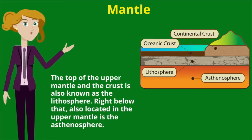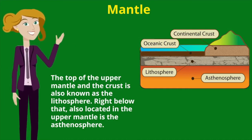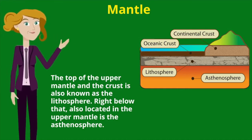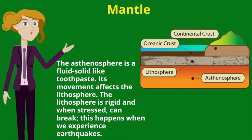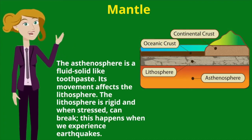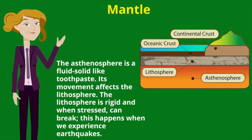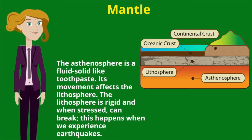The top of the upper mantle and the crust is also known as the lithosphere. Right below that, also located in the upper mantle, is the asthenosphere. The asthenosphere is a fluid-like solid, kind of like toothpaste, and its movement affects the lithosphere. The lithosphere is rigid and, when stressed, can break — this happens when we experience earthquakes.